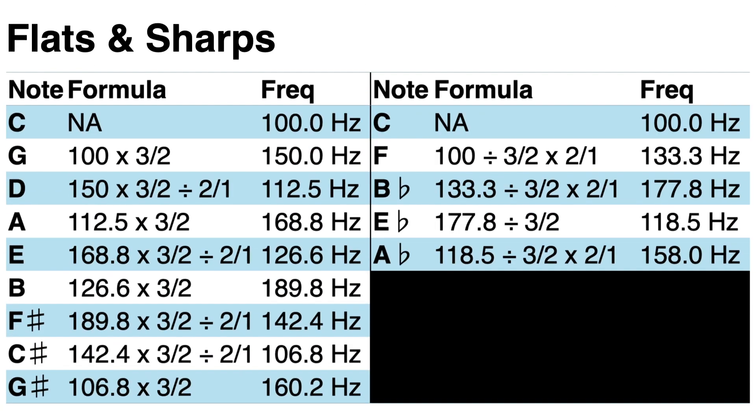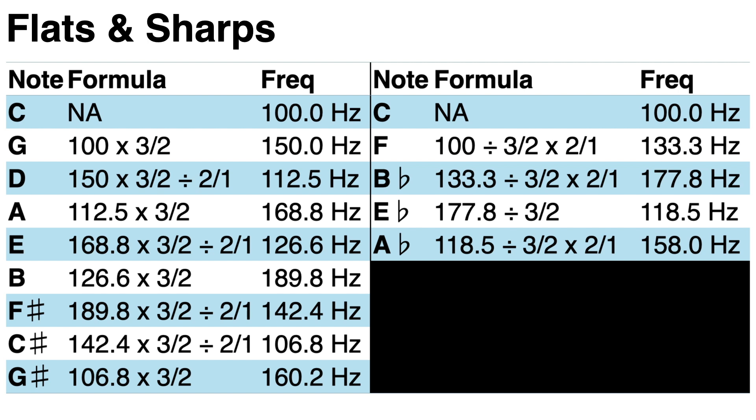Now let's tune our note C to 100 hertz, just for simplicity. Let's now find the notes G sharp and A flat above this C. To find the note G sharp, we start on the note C, and we go up by fifths, dropping down an octave occasionally to stay within a one octave range of our note C.